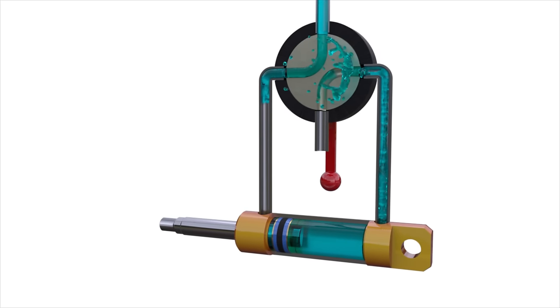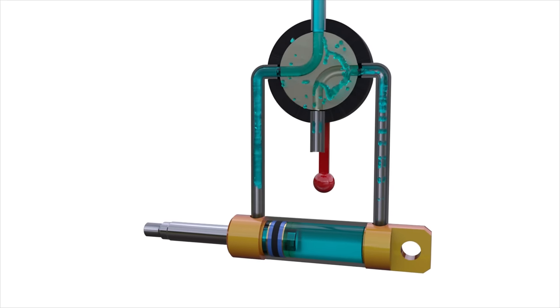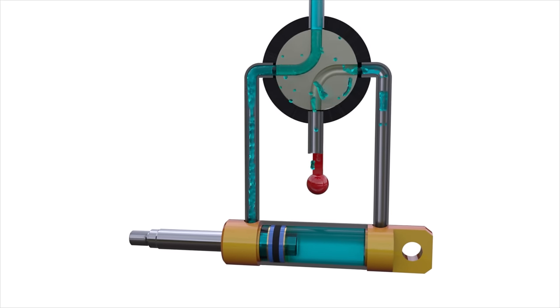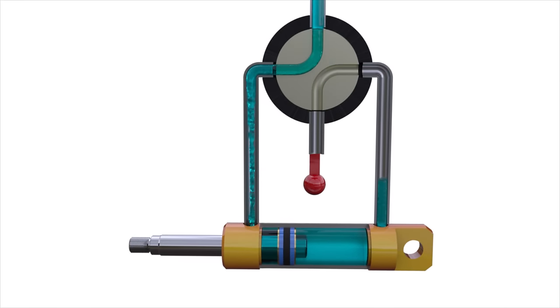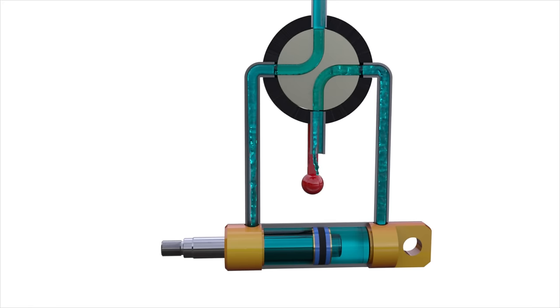Hence, we've got a directional control valve with a rotary spool. The use of such a spool isn't always convenient. There may be difficulties when sealing it. Besides that, when using the rotary spool, it's not always possible to implement more complex schemes.